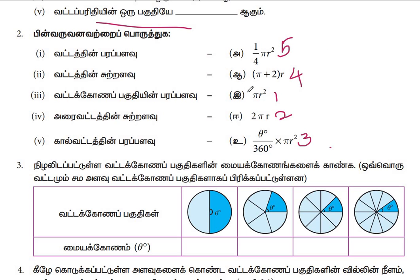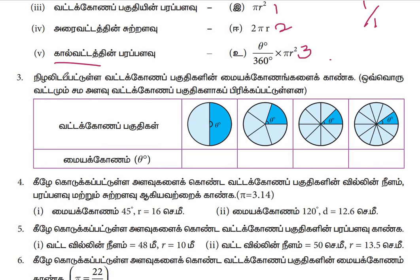This is easy. The formula is very easy. If you look at it, it is not equal to 1/4 πr squared — it is equal to 1/4 πr squared. The 1/4 πr squared is equal to 1/4 πr squared. You will find the 1/4 πr squared.